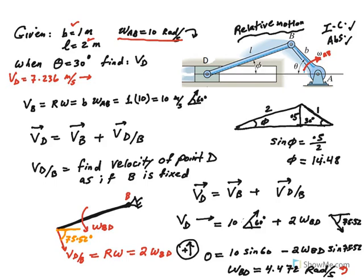So this is omega AB. When the angle theta equals 30 degrees, we want to find the velocity of the slider, which has no choice but to move — it is confined to move horizontally within this cylinder. So the slider or piston is moving to the right.